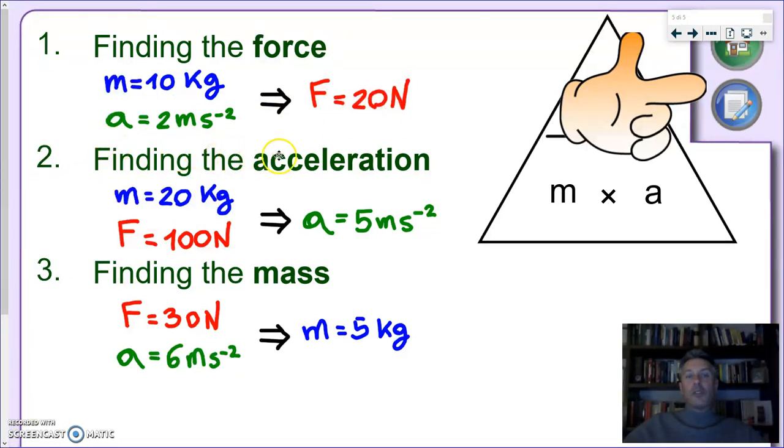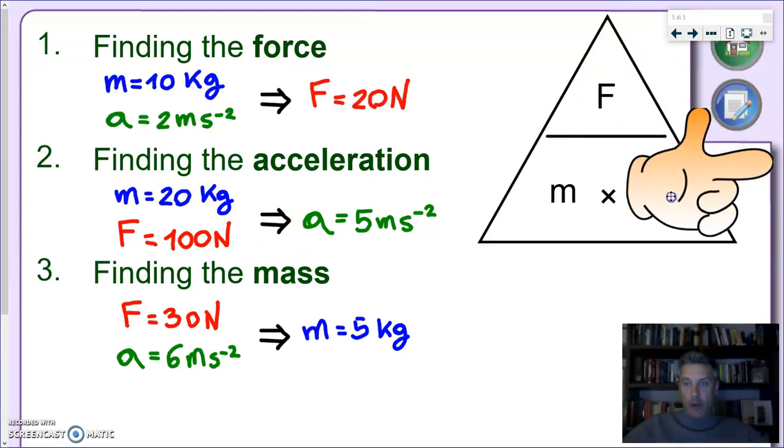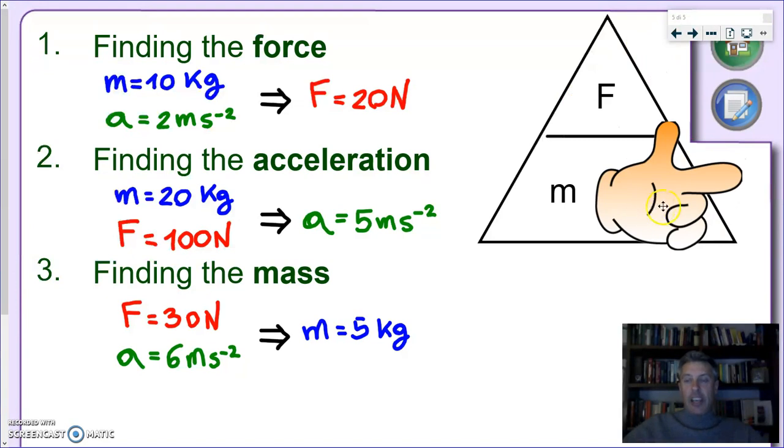What if I want to find the acceleration? Actually, this is the most common case. Most of the times I know the force acting on an object. I know the mass. I want to find the acceleration. So again, I'm moving my hand. This time I'm covering the acceleration. And what I get is that the acceleration is equal to force divided by mass. So for instance, if I have a mass of 20 kilograms, on which it's acting a resultant force of 100 newtons, I do 100 divided by 20. And I get a resultant acceleration of 5 meters per second squared.